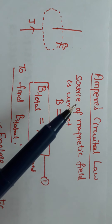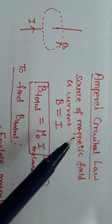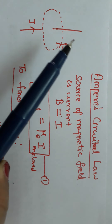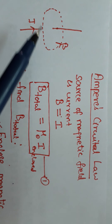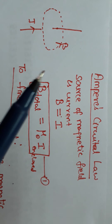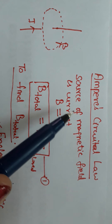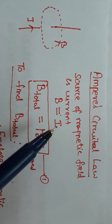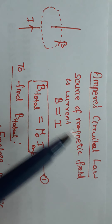The source of magnetic field is current. You can see a current-carrying conductor and the magnetic field around the conductor. Because the source of magnetic field is current, we have written B is proportional to I.